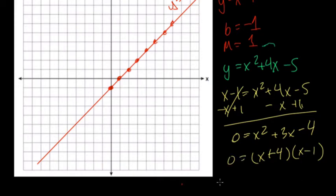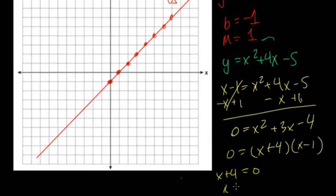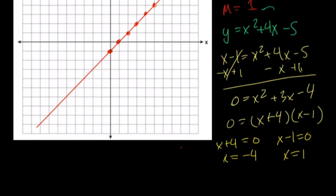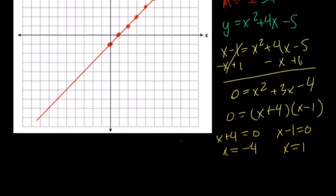And then this means that x plus 4 could equal 0. So subtract 4 from both sides, x equals negative 4. And this means that x minus 1 could equal 0. Add 1 to both sides, and x equals 1. These are the points where the line and the quadratic meet, except we don't have points yet. We just have x values. Plug those x values into your line, make your life easy, and find the points.